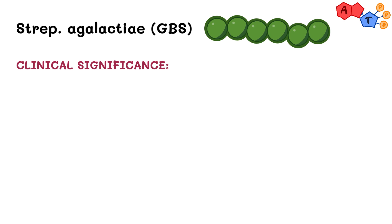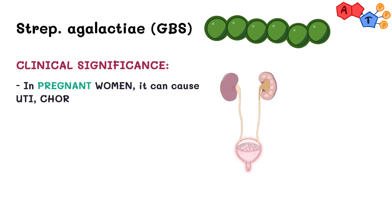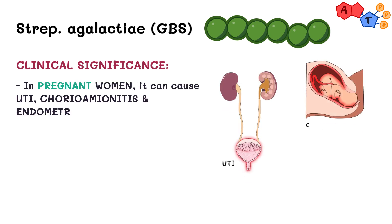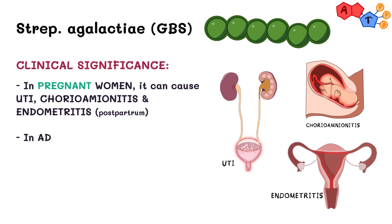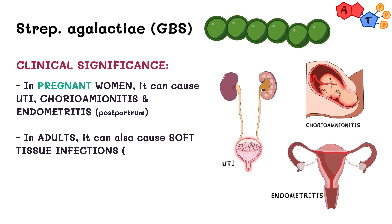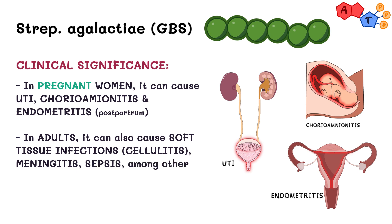In pregnant women, GBS can cause UTI, chorioamnionitis, and endometritis. Whereas in non-pregnant adults, although not very common, GBS can cause soft tissue infection, cellulitis, meningitis, sepsis, and other diseases.